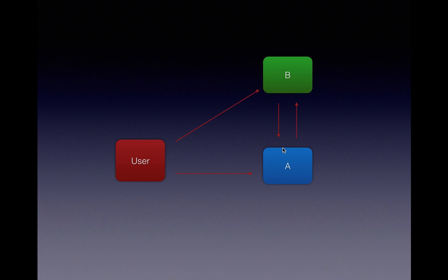From that point, application B will share a security token with application A, using which these two communicate, and application A will get all the data which it requires from application B. This process of logging in and getting authorized — this entire workflow — is covered in the OAuth standard.